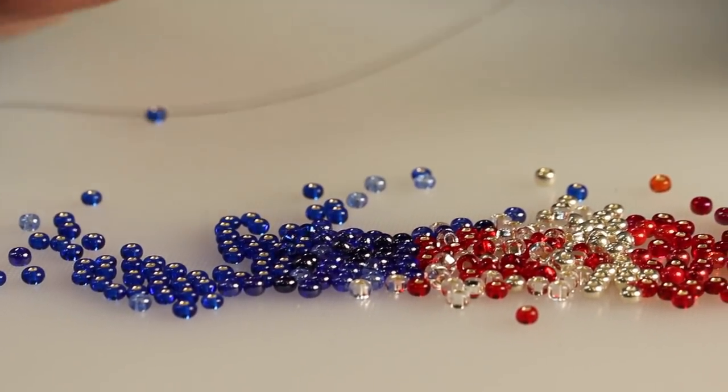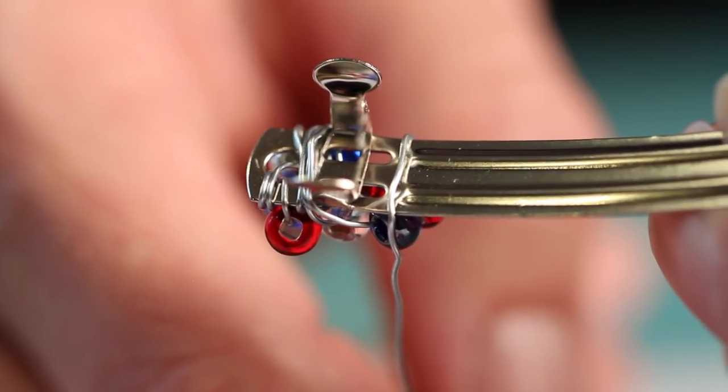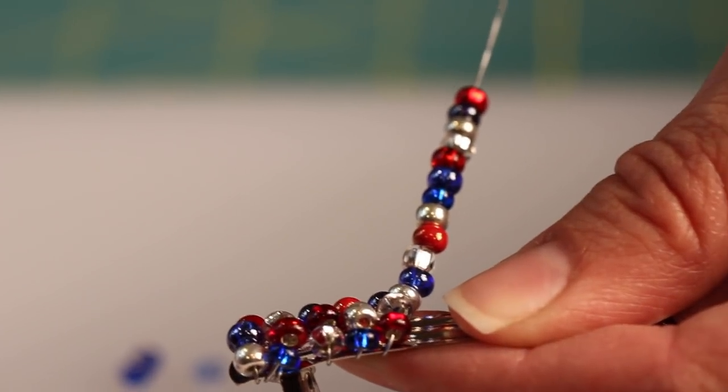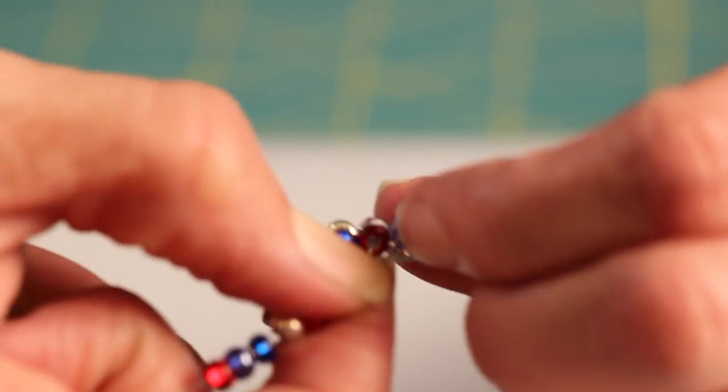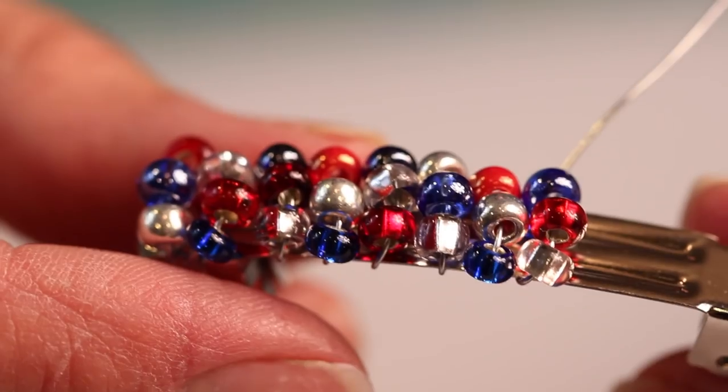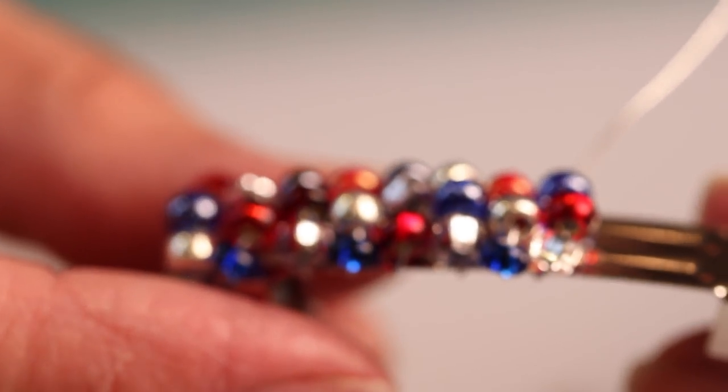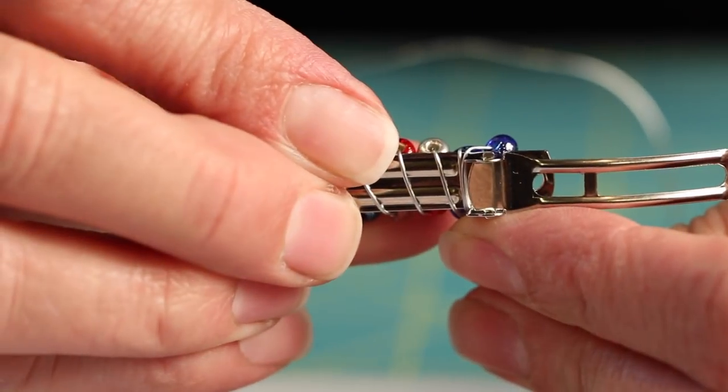Grab three more beads. Wrap them around once. And then take your wire around one more time without any beads to secure it on the other side of the prongs. And then you'll just continue to grab three beads at a time, wrapping them around. Make sure that the wire is pulled tight each time and the beads are laying flat.